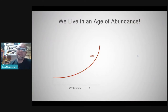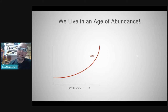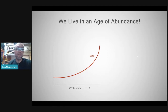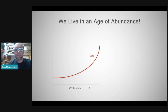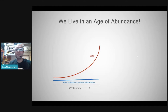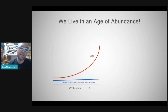We live in an age of abundance. More data has been created in the last few years than in all of human history. That data can help us understand more about the world, the universe, one another. And in theory, it can help us learn faster, make better decisions, enjoy greater wellness. But the brain's ability to process data isn't keeping pace — at best it's slightly increasing while data is increasing exponentially.